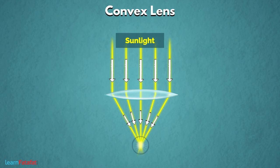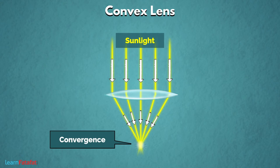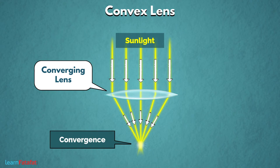The meeting of rays at common point is known as convergence. Convex lens की light rays को converge करने की ability के कारण उसे converging lens भी कहा जाता है.